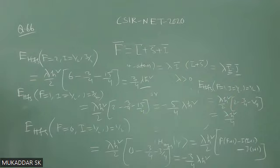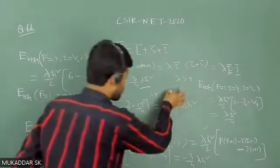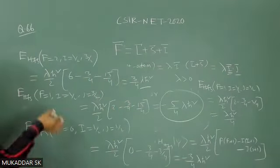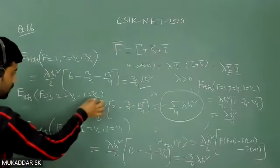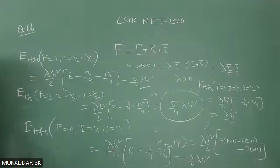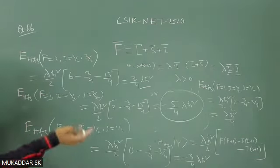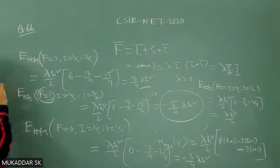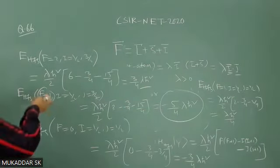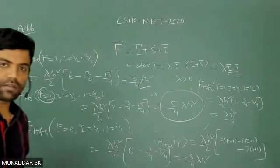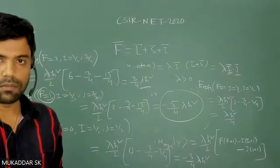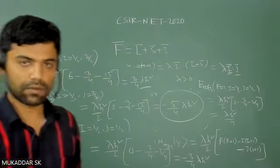From all combinations, you can see that the minimum energy is −(5/4)λℏ², and this occurs when F = 1, I = 1/2, and J = 3/2. So the value of F for which you get the lowest energy is F = 1. The correct answer is F = 1 gives the lowest energy of the P orbital for hydrogen atom. Thank you very much.